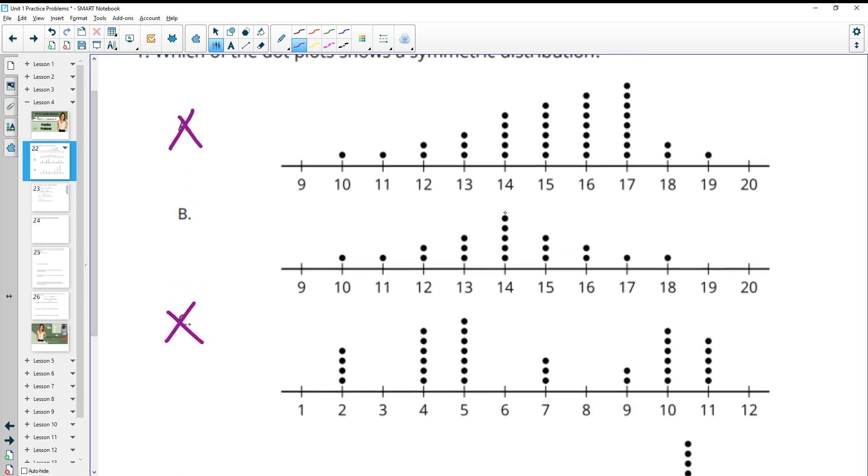So that leaves B and we can see that this would be the middle. And we've got three and three dots, two and two, one and one, one and one. So it is symmetric or the same on both sides of this middle line.